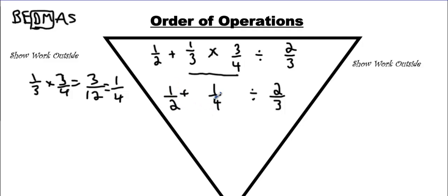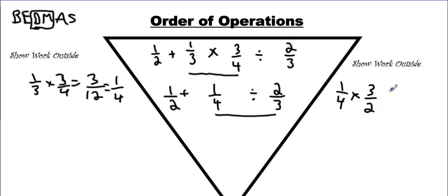Then move on to step two. BEDMAS says you've got to do division and multiplication, so we have the multiplication done and division coming up next, so we're going to divide these two here. We'll show our work on the side. Remember, you're going to change the sign, and then flip the other number, and that's going to give you 3 over 8. You're going to write it down here, and then you're going to bring everything else down. Don't forget that step.